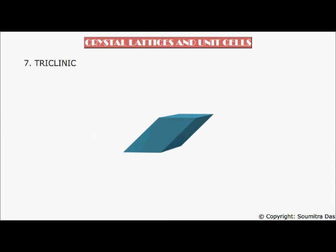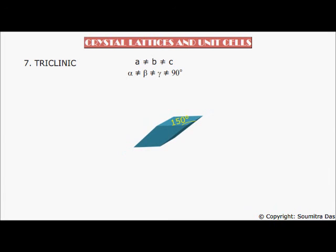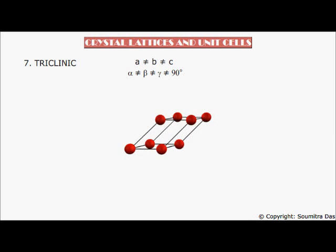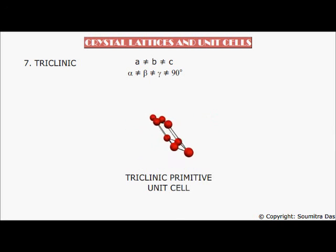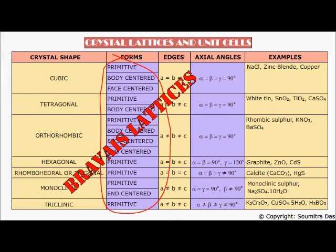Number seven: Triclinic. The three edges are unequal as well as the three axial angles are unequal. For example, beta = 135 degrees, alpha = 120 degrees, and gamma = 150 degrees. This is only available in the primitive form. These 14 forms are collectively known as Bravais lattices.